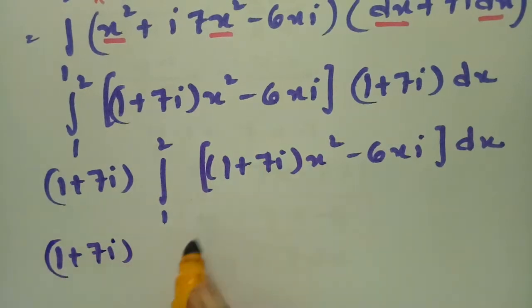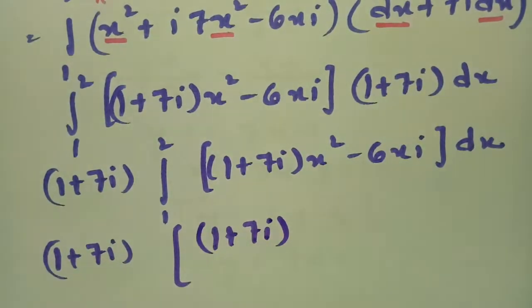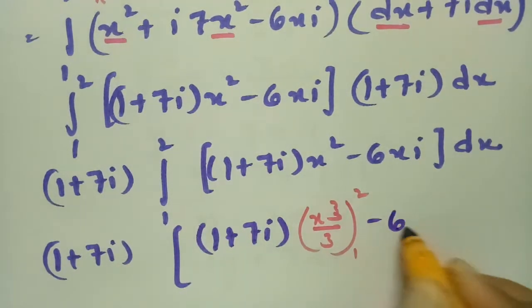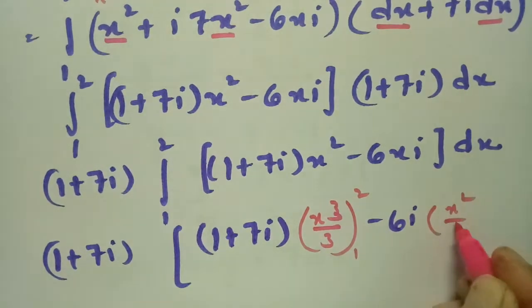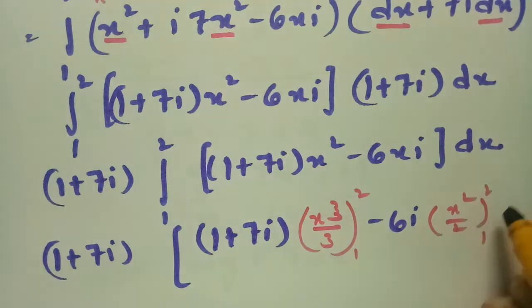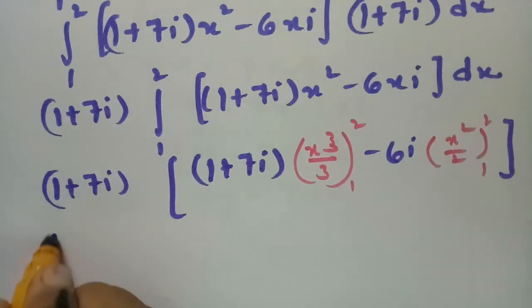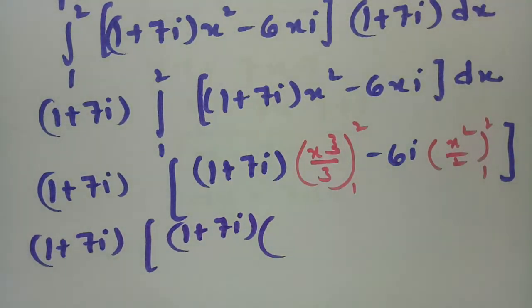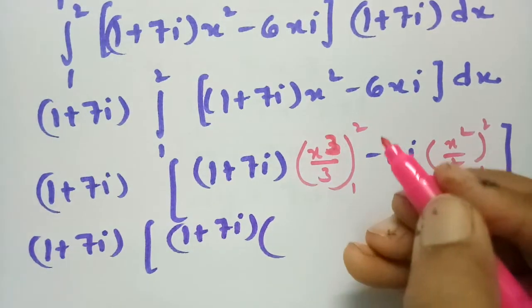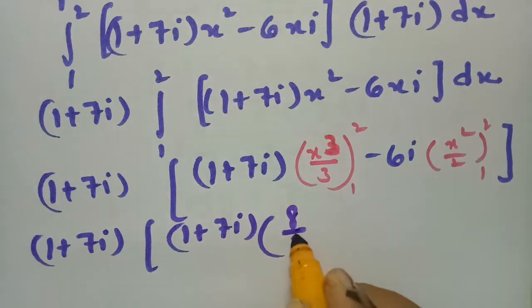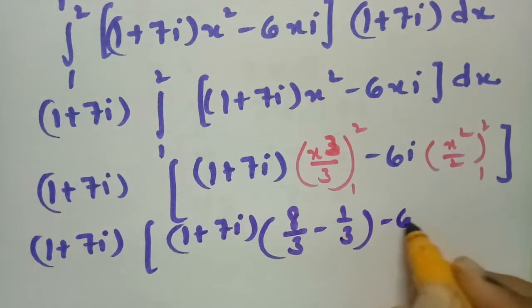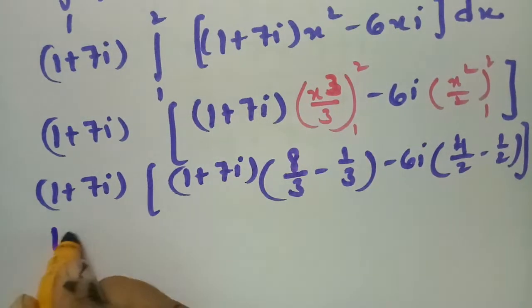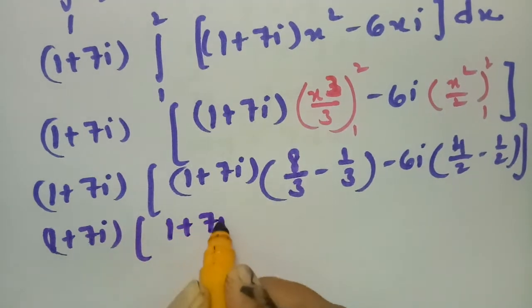Integrating with respect to x: for x² the integral is x³/3, and for x the integral is x²/2, evaluated between limits 1 to 2. Substituting upper minus lower: x³/3 gives 8/3 − 1/3 = 7/3, and for the x² term: 4/2 − 1/2 = 3/2. So the expression is (1 + 7i)·(7/3) − 6i·(3/2).